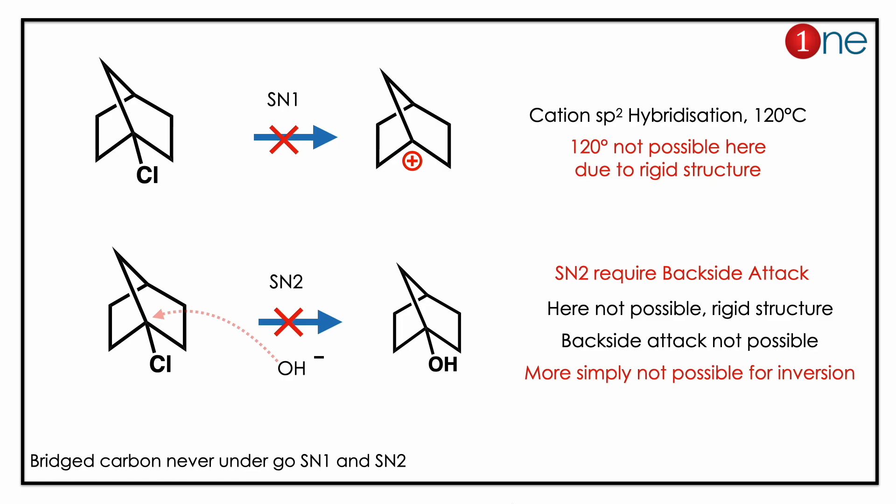The reason is that the SN1 mechanism forms a carbocation as the intermediate. Here, cation formation is impossible because of the rigid structure — a carbocation is sp2 hybridized and requires 120-degree bond angles, which is not possible with this rigid bicyclic framework. So the compound will not undergo an SN1 reaction.